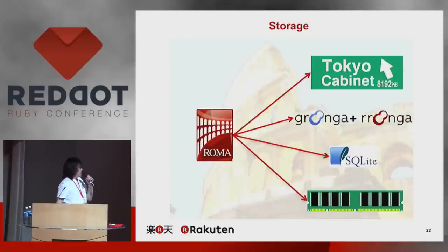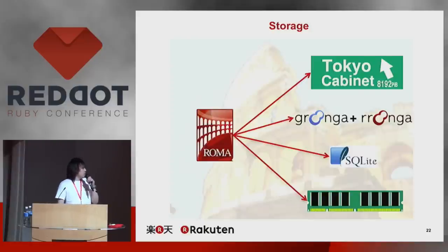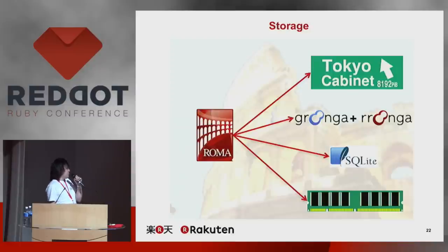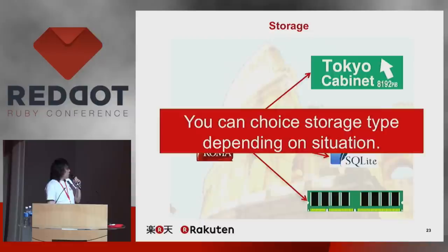Next is the storage system. ROMA supports multiple storage systems. For example, Tokyo Cabinet, Groonga, SQLite, and of course you can use OS memory like memcached. You can choose a storage type depending on your situation.